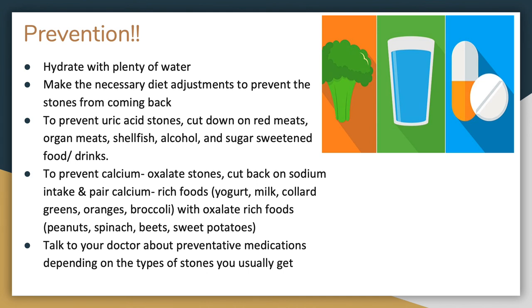Some general prevention tips for kidney stones are hydrating with plenty of water and making diet adjustments to prevent the stones from coming back. For example, to prevent uric acid stones, you should cut down on red meats, organ meats, shellfish, alcohol, and sugar-sweetened food or drinks. To prevent calcium oxalate stones, you should cut back on sodium or salt and pair calcium-rich foods such as yogurt, milk, collard greens, oranges, and broccoli with oxalate-rich foods such as peanuts, spinach, beets, and sweet potatoes. The diet changes according to the type of stone you usually get, so those changes will be recommended by your provider. You can also talk to your provider about preventative medications, depending on the type of stone you typically get.